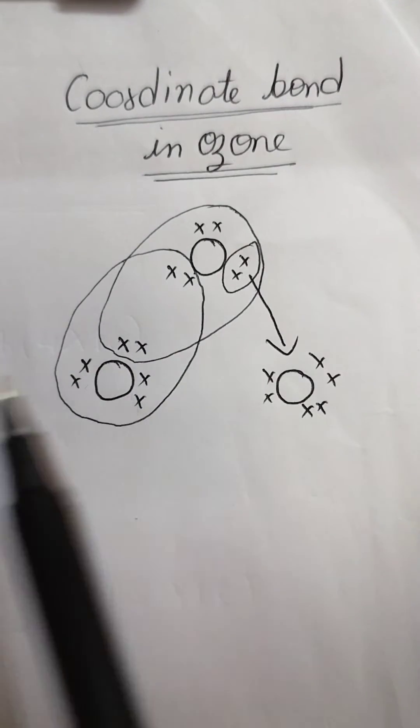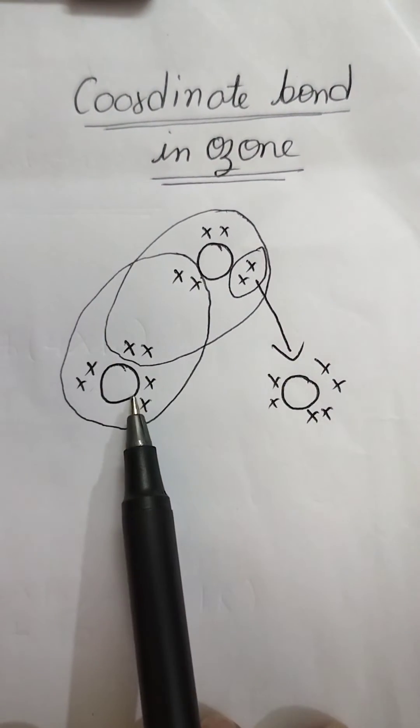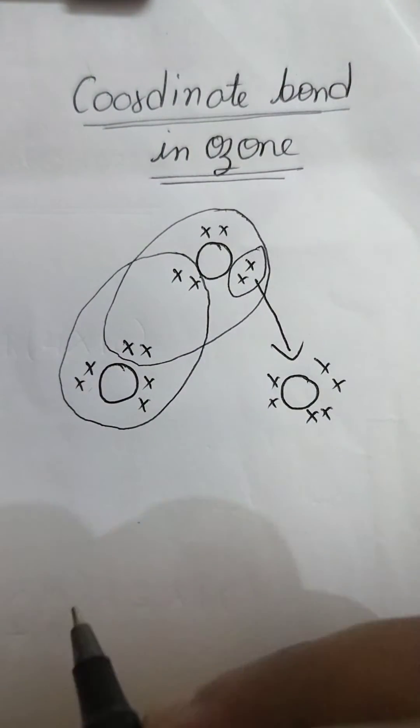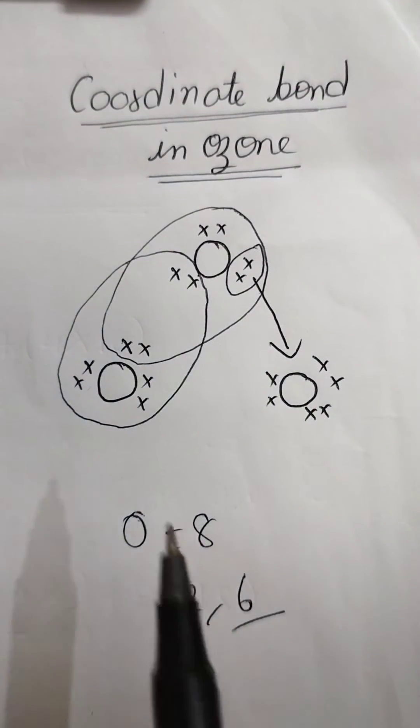This is first, second and third. Anyone can be first, second and third. That doesn't matter. Now each oxygen has six valence electrons, right? Because the atomic number of oxygen is eight. So configuration will be two six. So six valence electrons which I have drawn.